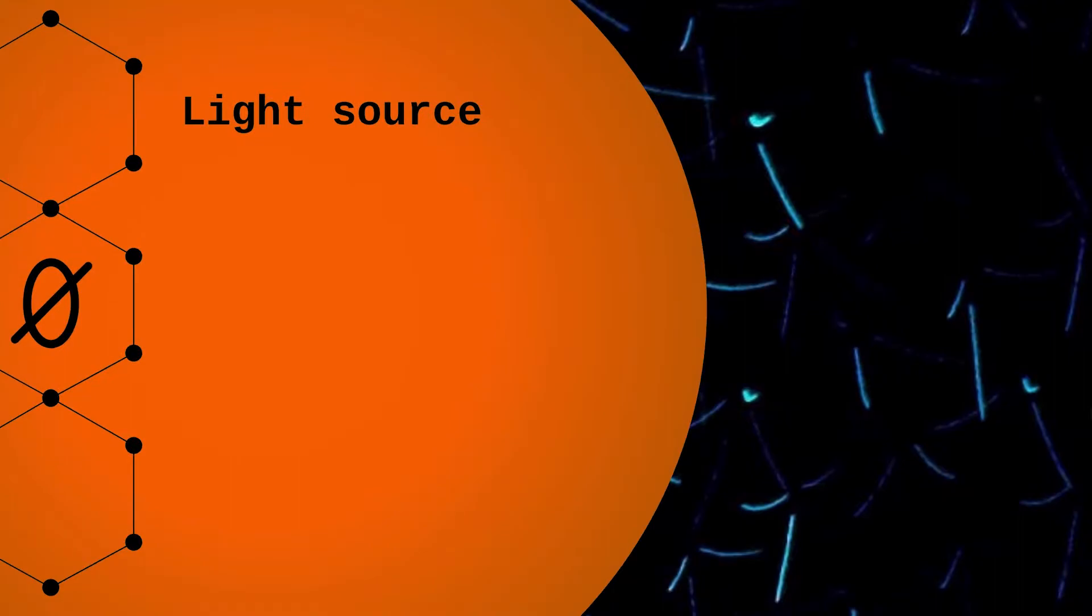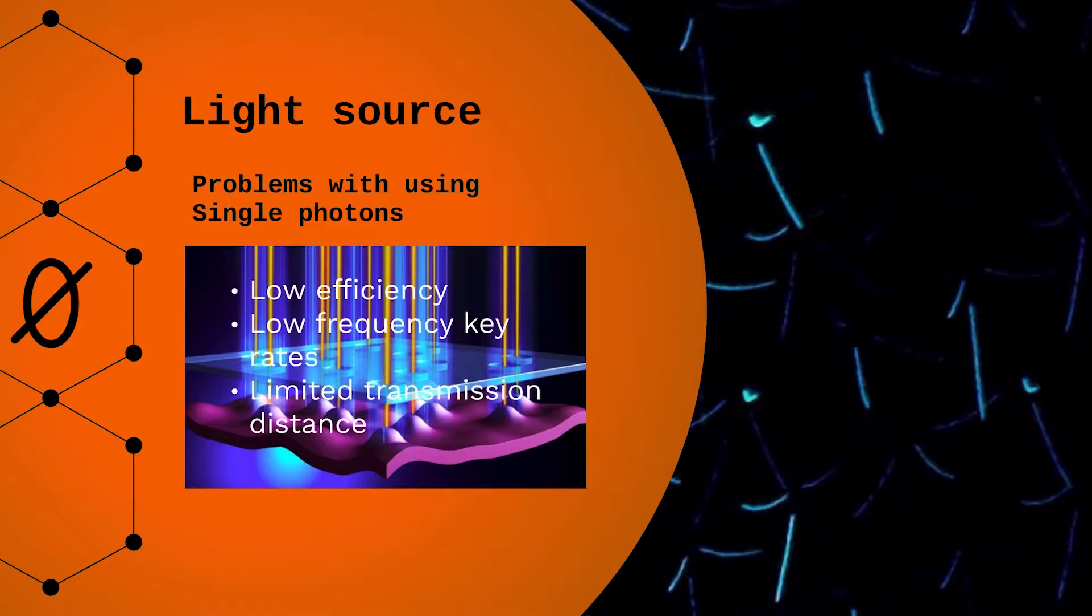In the BB84 protocol, Alice sends quantum states to Bob using single photons. However, we cannot use single photon sources in our system because current single photon sources operate at low efficiency and frequency. Key rates and transmission distances are limited.